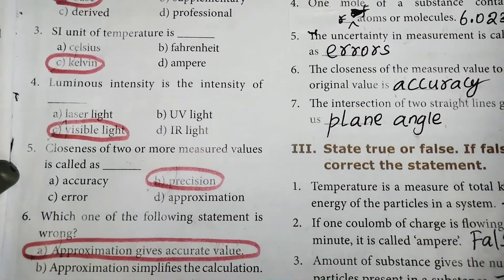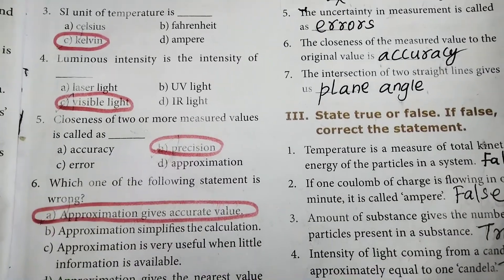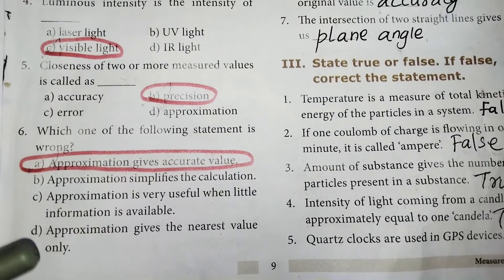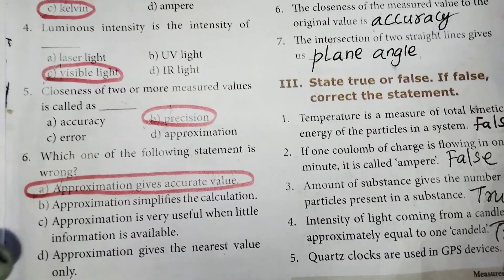Fifth one, closeness of two or more measured values is called B, precision. Sixth one, which one of the following statement is wrong? A, approximation gives accurate value.